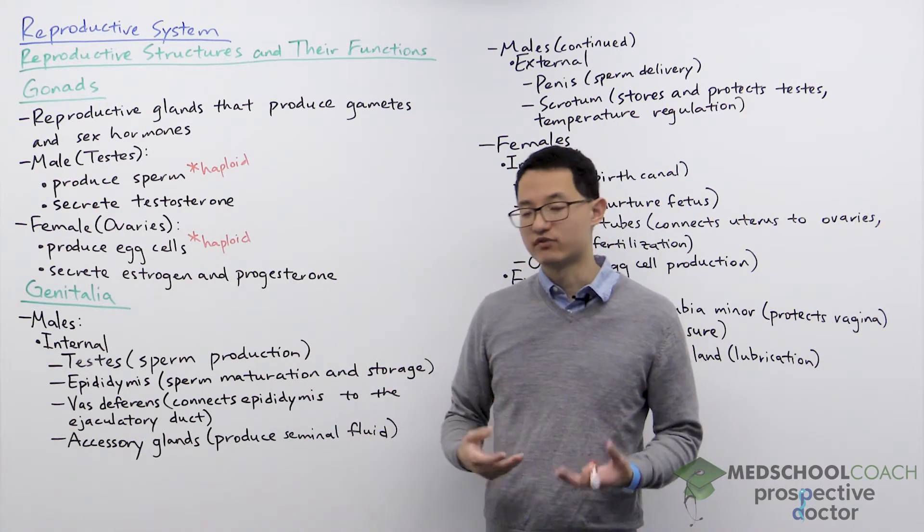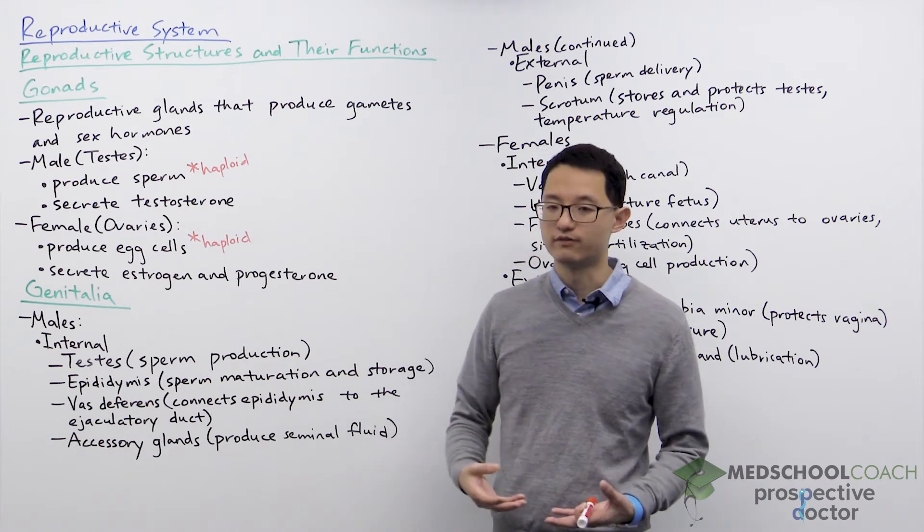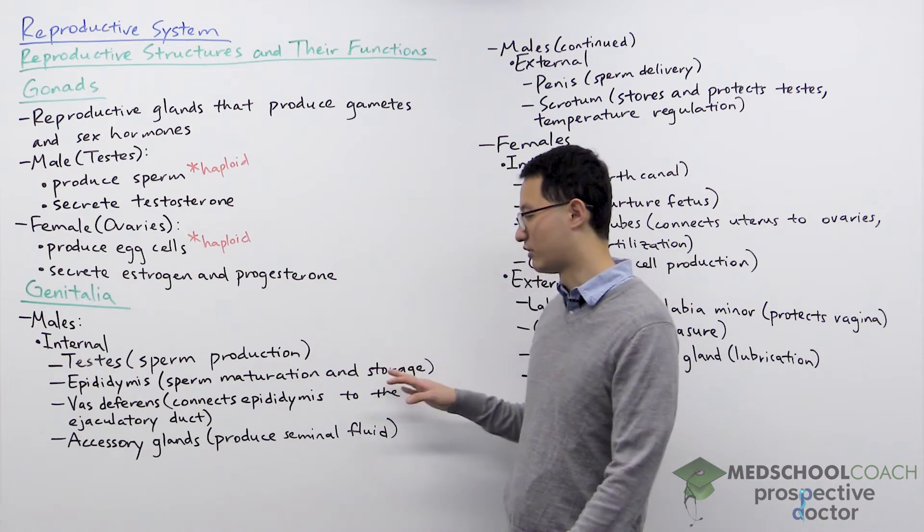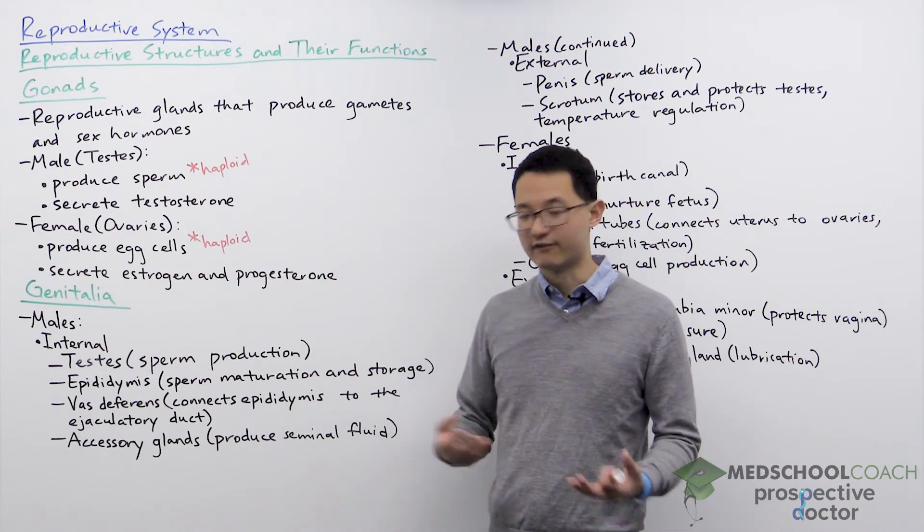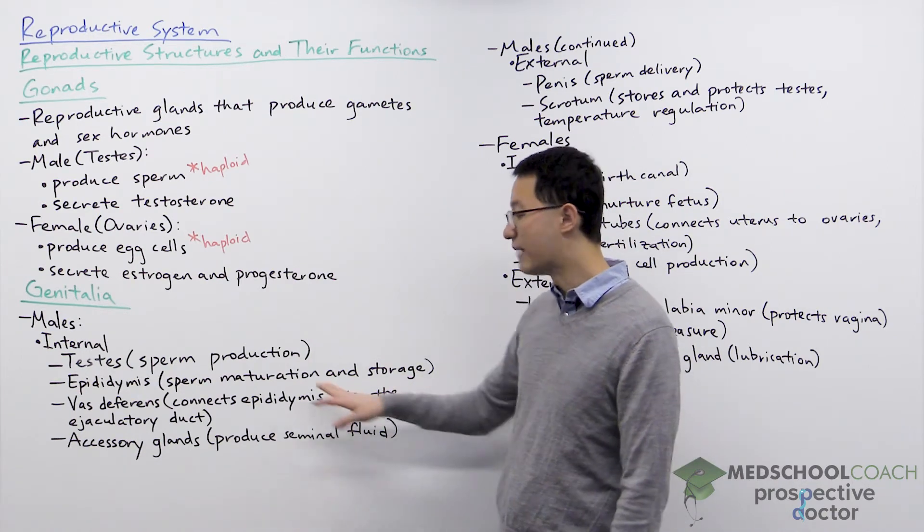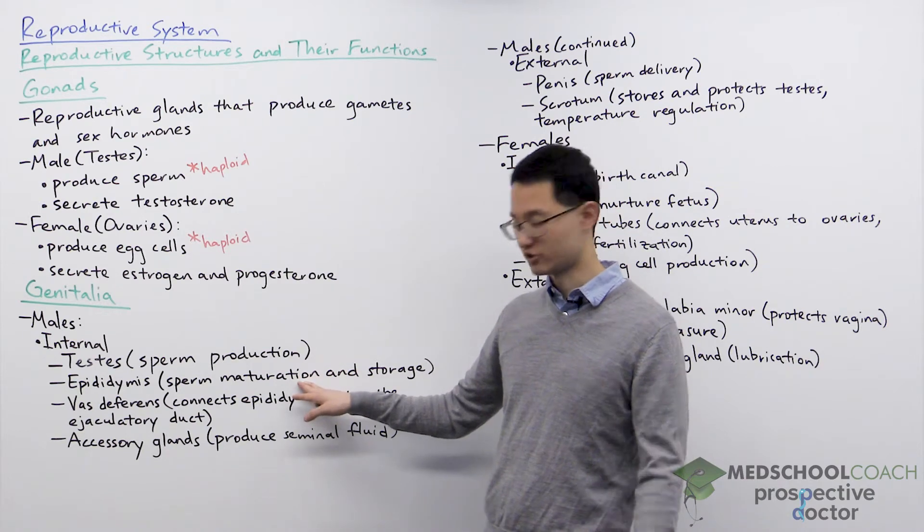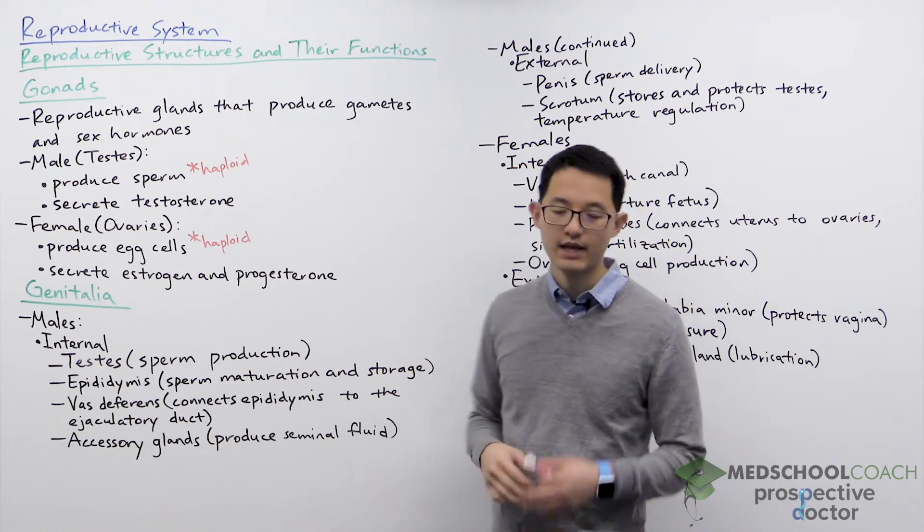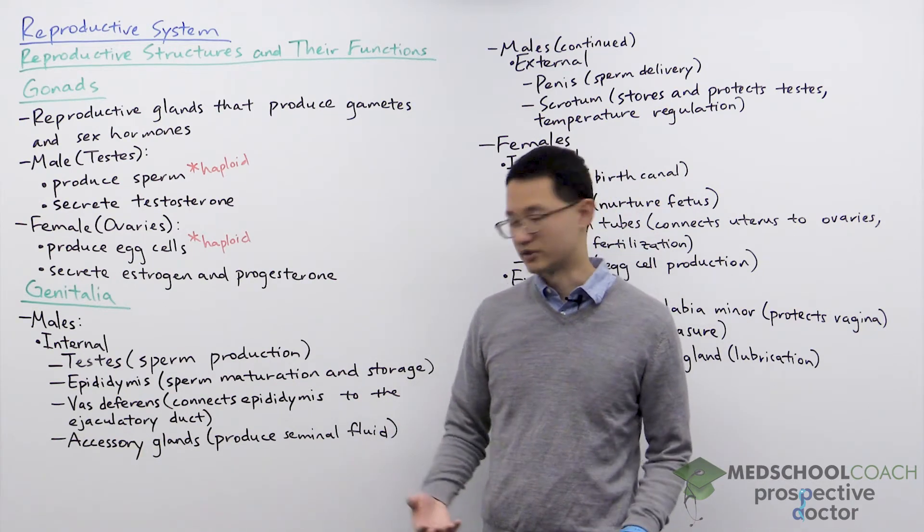When sperm is first produced it is in an immature form that is not capable of moving and also not capable of impregnating a female. So it has to undergo a maturation process to form mature sperm and this is also the structure where the sperm are stored prior to ejaculation.